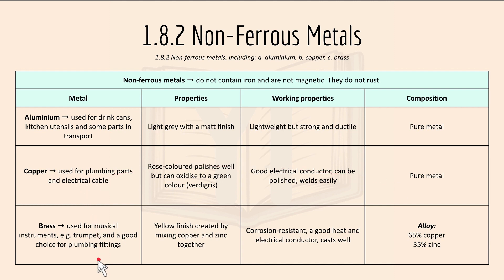Brass is used for musical instruments like trumpets and is a good choice for plumbing fittings. It has a yellow finish created by mixing copper and zinc together. For working properties, it's corrosion resistant, a good heat and electrical conductor, and it casts well. Brass is an alloy consisting of 65% copper and 35% zinc.